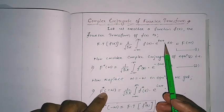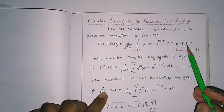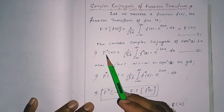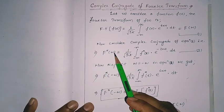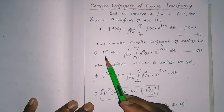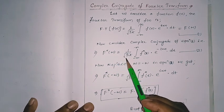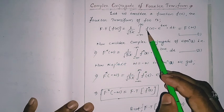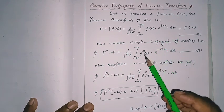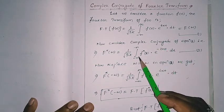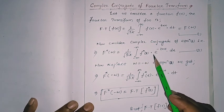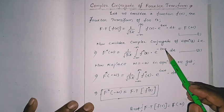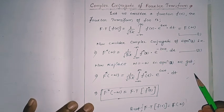Now if we take the complex conjugate of both sides, the complex conjugate F*(ω) is equal to 1 over 2π times the integral from minus infinity to plus infinity. Since there is an i in the exponent, the complex conjugate gives e to the minus iωt dt. Let this be equation number 2.